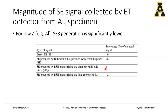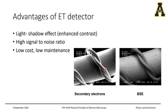This gives an idea of how secondary electrons can also provide information on the atomic number of the material. In the last class I mentioned that backscattered electrons can be used to generate composition contrast or atomic number contrast images, but in principle you could also use the ET detector or take advantage of secondary electrons to generate Z-contrast in images.